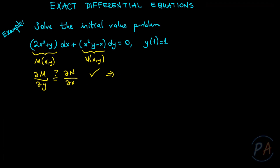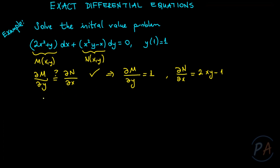First, let me calculate: partial derivative of M with respect to y is 1, and partial derivative of N with respect to x is 2xy - 1. So the exactness condition is not satisfied — the given differential equation is not exact.